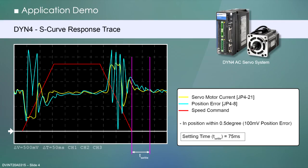Here is the response read directly from the DYN4 servo drive motor current and position error analog monitor channels. If we trace and overlay the command S-curve, we can see that for a sample of 0.5 degree in position window, the system is able to achieve this in just 75 milliseconds.